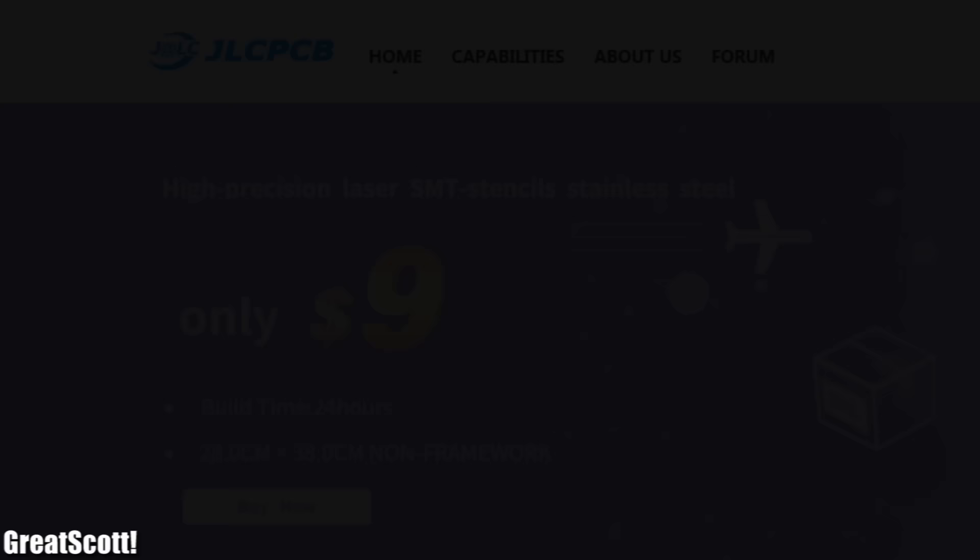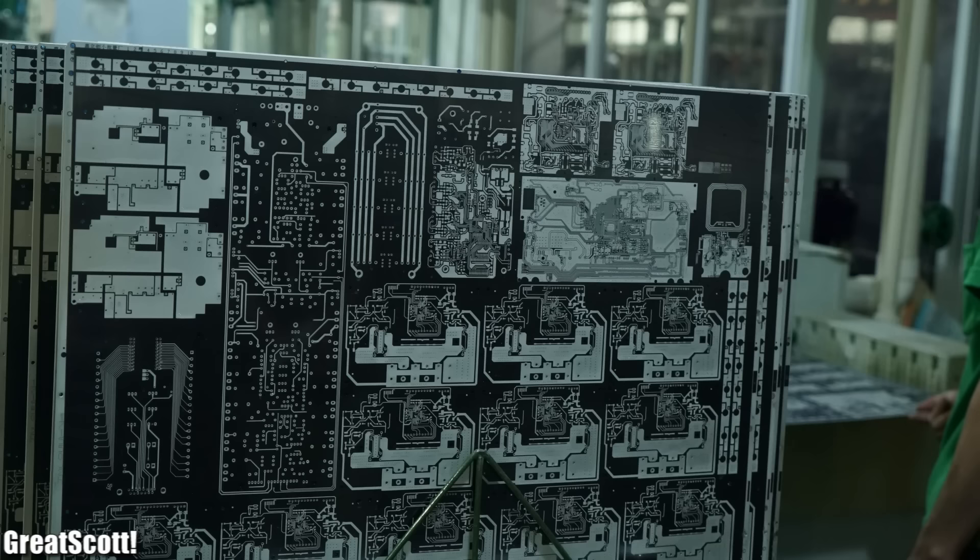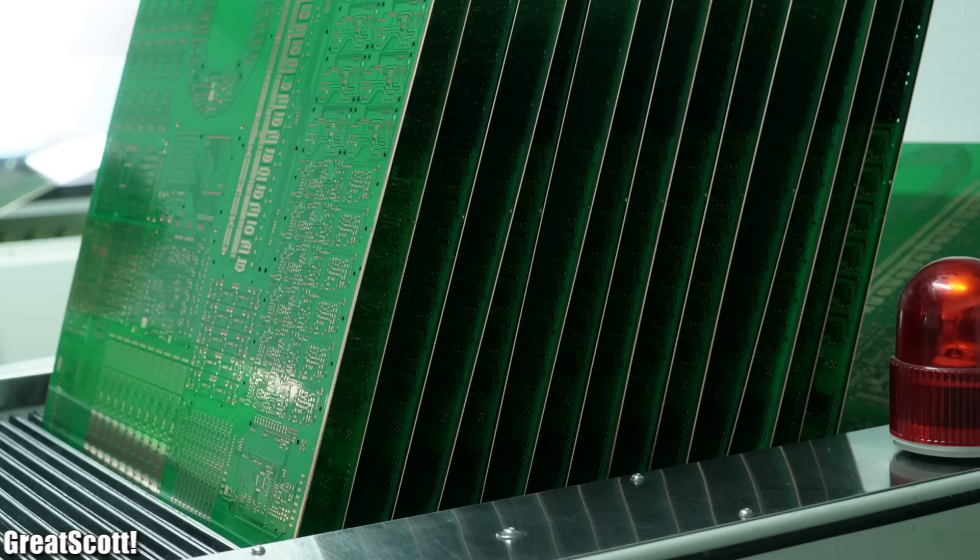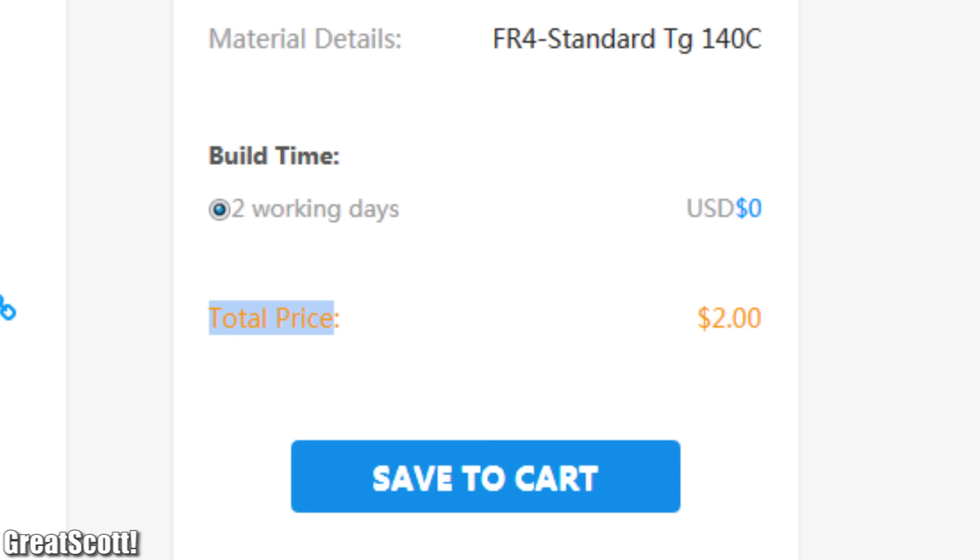This video is sponsored by JLCPCB. One fact about them: the annual production capacity of JLCPCB is 200,000 square meters for different layers of PCBs. Upload your Gerber files to order high-quality PCBs for low prices, currently even with free shipping.